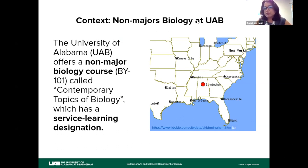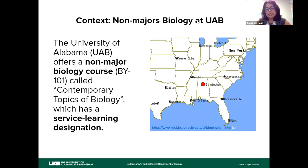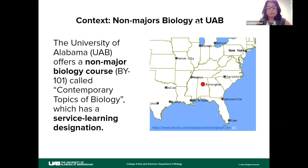That was the question before me when I first started instructing non-majors at the University of Alabama at Birmingham. UAB is located in the heart of Birmingham, nestled in the civil rights movement, with a large underrepresented student population. UAB is well known for its medical and dental schools. We also have a large non-majors student population in the Department of Biology, where we teach a course called Contemporary Topics of Biology. Since the last five years, we have implemented service learning. The course meets twice a week for 75-minute periods, and involves between 400 to 500 students each semester, including summer.